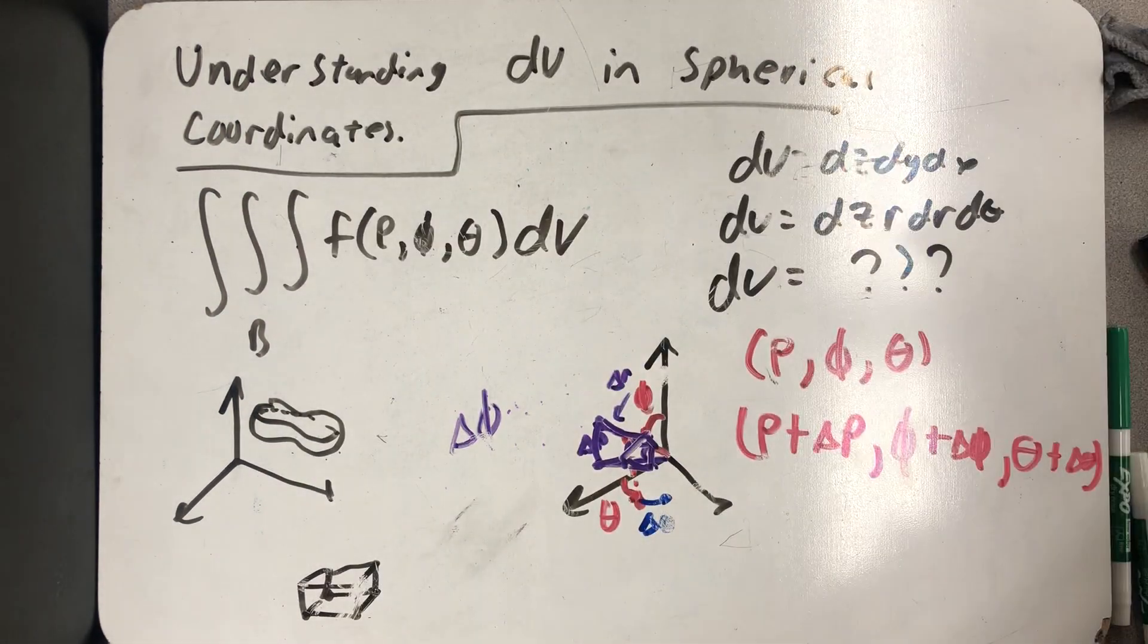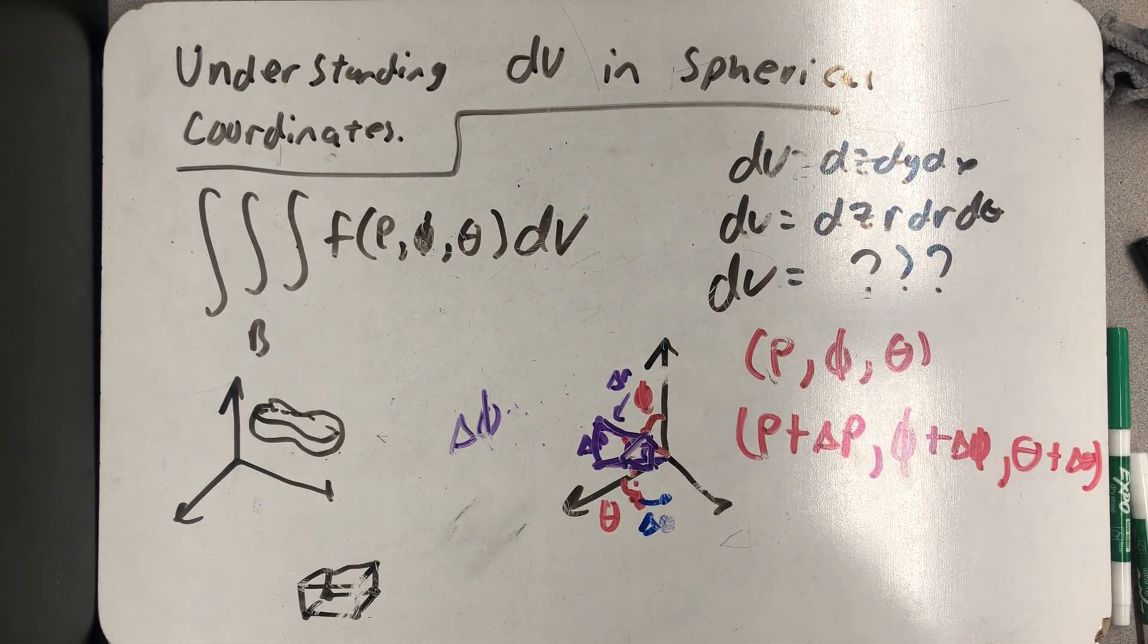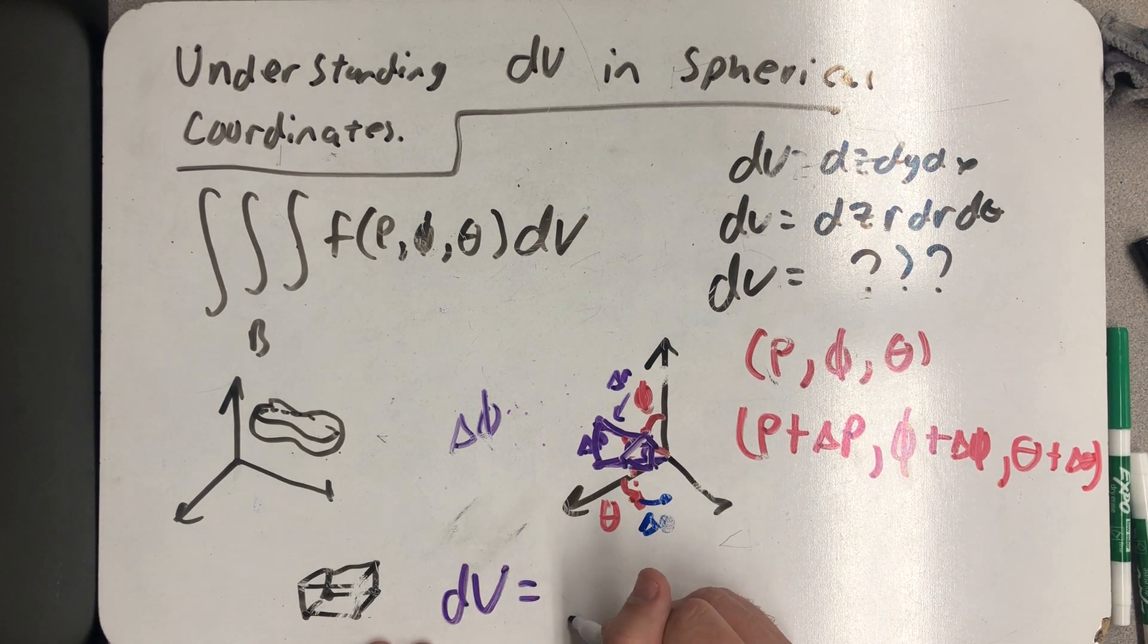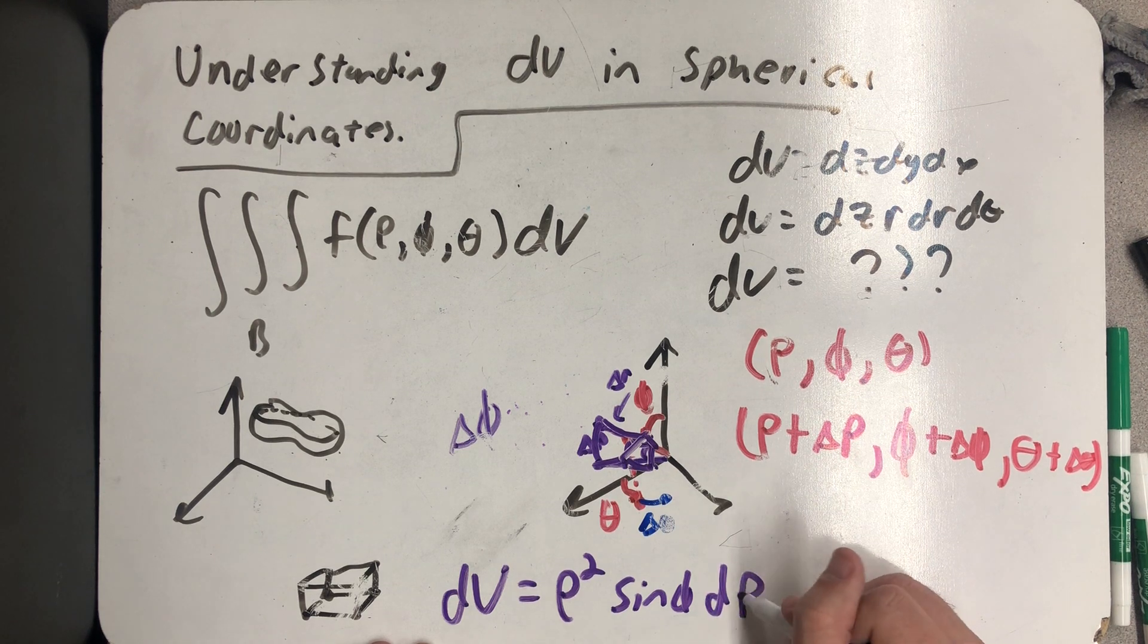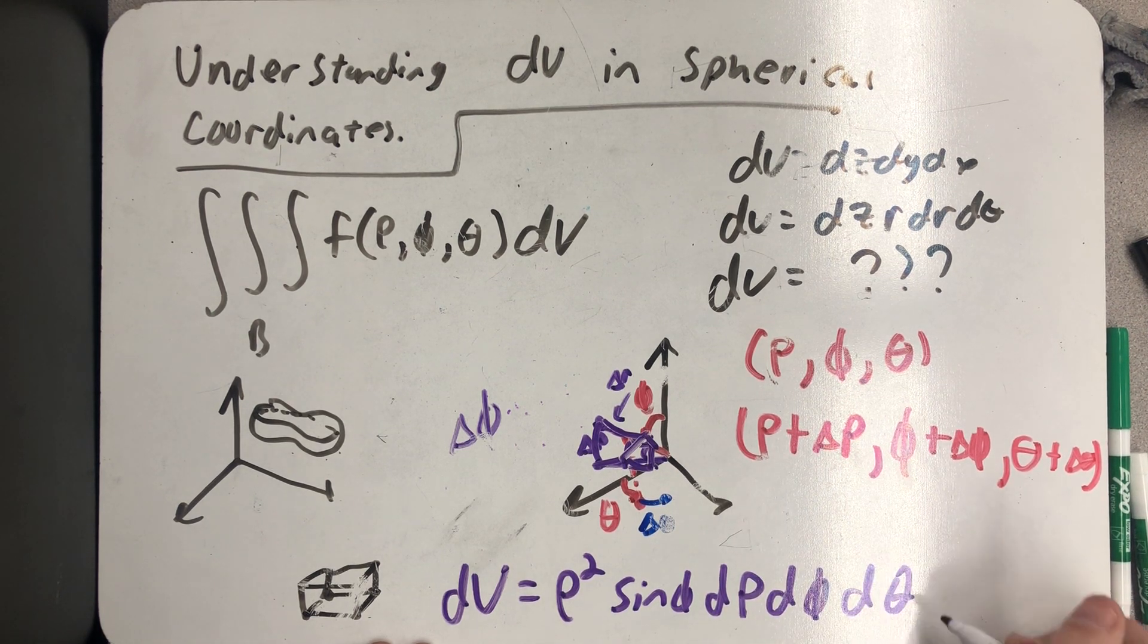And that's what dV is equal to in spherical coordinates. dV is equal to ρ² sin φ dρ dφ dθ.